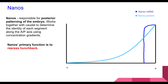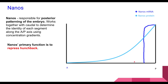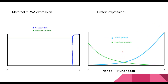Looking at nanos mRNA, we have a very high concentration at the posterior end, and then it sharply drops off, because it's localized to the posterior end just like bicoid was localized to the anterior portion. When the egg gets fertilized, that mRNA is translated into protein, forming a nice gradient — very high concentration at the posterior end and a low concentration at the anterior end. Since nanos represses hunchback, let's look at these mRNA and protein expression graphs together. Nanos mRNA is highly localized to the posterior portion, which is why we get that steep drop-off moving away from the posterior end.